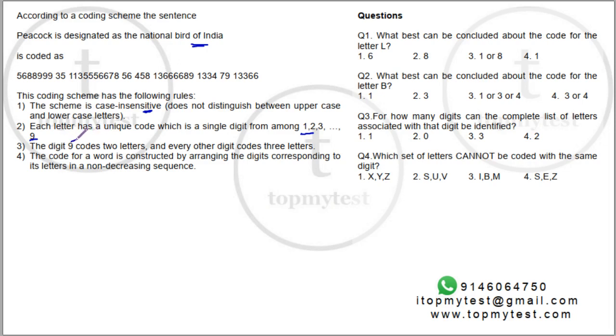Now let's see what this says. Digit 9 codes 2 letters while every other digit codes 3 letters. So 1 to 8 will have 3 letters each. For example, 1 can code A, C and K, something like that. This might not be the case, but it can code only 3 digits whereas 9 can code only 2 digits. And you can check: 8 times 3 is 24 plus 2, 26 alphabets are coded.